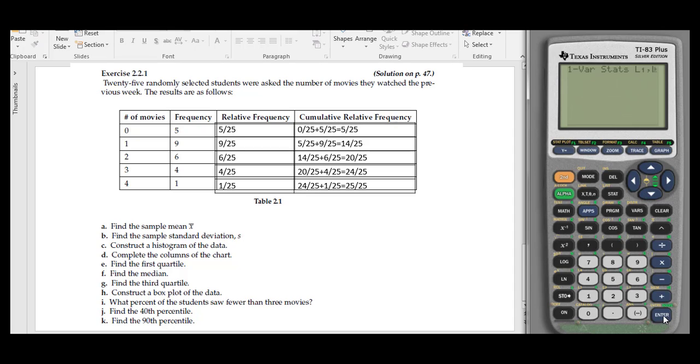Now if I hit Calculate, it gives me my mean, my sample standard deviation (which is S of X), and my first quartile. If I scroll down, I have my minimum, first quartile, median, third quartile, and maximum—the five-number summary. So all of these pieces are filled in.